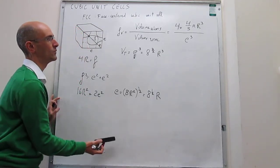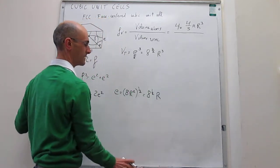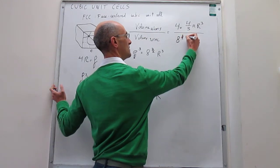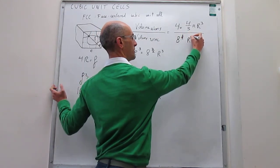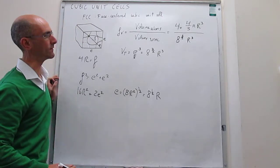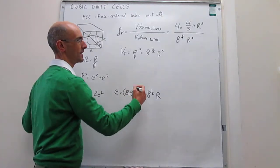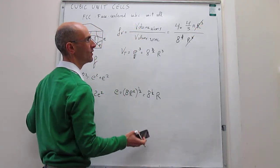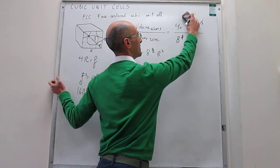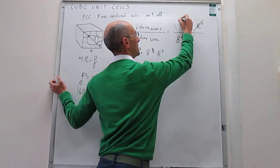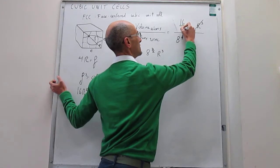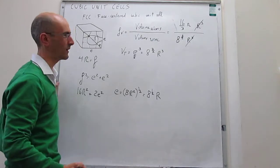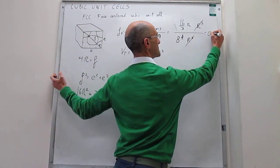And then we can finally come to our packing efficiency and then find out that this is going to be equal to (16/3)π over 8^(3/2) times R cubed, which makes the calculation relatively straightforward. Notice that those R cubed terms cancel out, and then you simply have here (16/3)π divided over 8^(3/2). So when you calculate that, this number is 0.74.